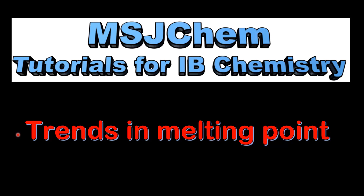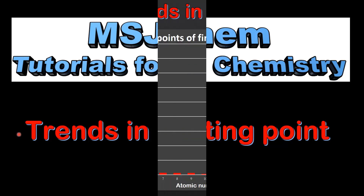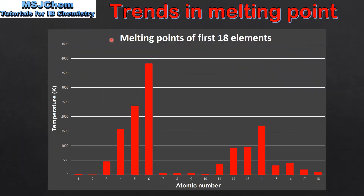This is MSJChem. In this video I'll be looking at trends in melting point in the periodic table. Here we have a graph of the melting points of the first 18 elements in the periodic table. We'll start by looking at the trend in melting point for the elements in period 2.